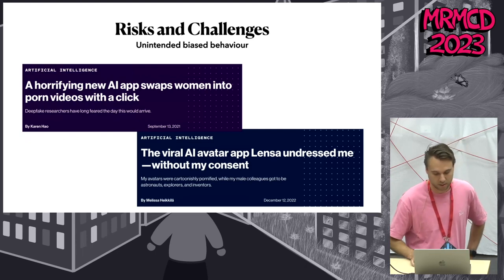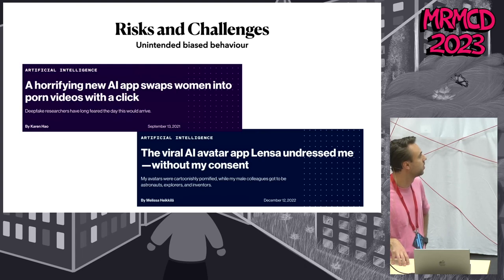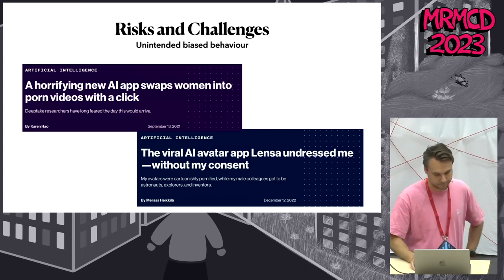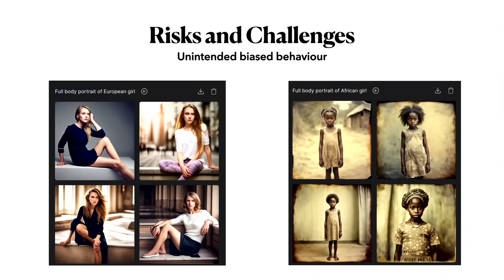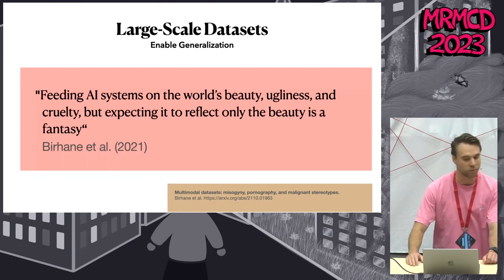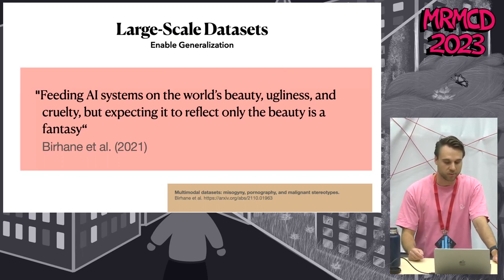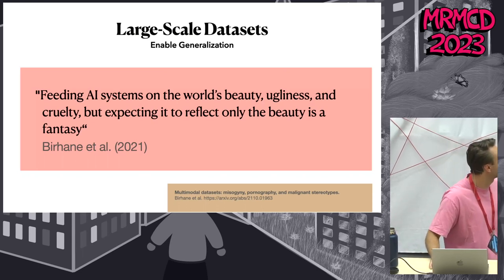An example is the Lensa app, an image editing app which tended to undress female users — especially those who appear Asian. These biases are well known and not restricted to nudity. Using one popular text-to-image model with almost the same prompt, just switching the continent from European to African, produces very different images, highlighting significant fairness biases.